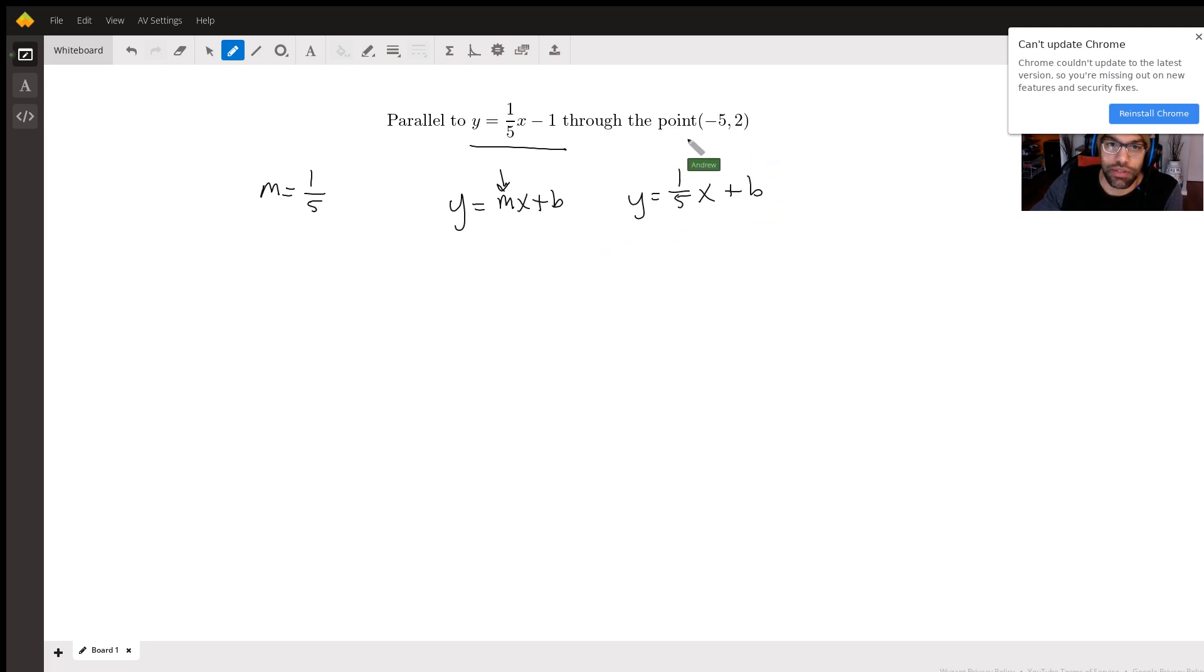Now this says here that this line goes through this point, and this point here is an xy coordinate. What this means is x here is our input for our function and y is our output. It corresponds to this equation here. So when x equals negative five, then y will equal two. So what we can do is substitute these values into this equation, and that'll give us b, because we'll eliminate a couple of the unknowns here.